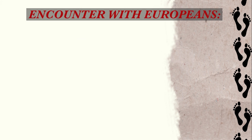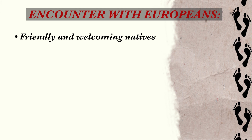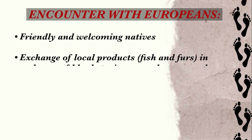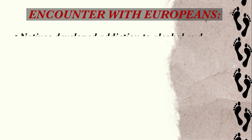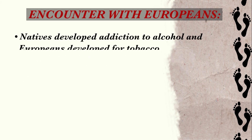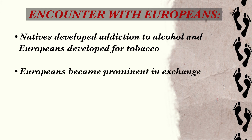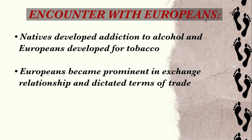Upon encounter with Europeans, the natives were friendly and welcoming. They exchanged local products — fish and furs — in return for blankets, iron vessels, guns, and alcohol from the Europeans. Natives developed an addiction to alcohol, while Europeans developed one for tobacco. Over time, Europeans became prominent in the exchange relationship and dictated the terms of trade.